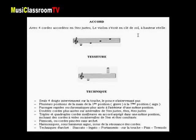Le violon est l'instrument le plus aigu du quatuor à cordes frottées, qui comprend le violon, l'alto, le violoncelle et la contrebasse. Il possède quatre cordes accordées en quinte juste et s'écrit en clé de sol à hauteur réelle. Les quatre cordes sont le sol, le ré, le la et le mi.